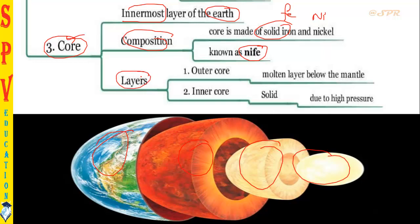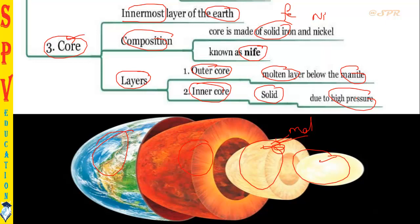The outer core is mostly in a molten form. The inner core is always solid because of high pressure — as I already explained, high pressure increases the melting point, so the inner core lies in solid form. This question — why is the inner core solid — has been asked many times and will continue to be important.